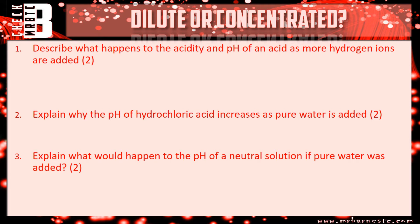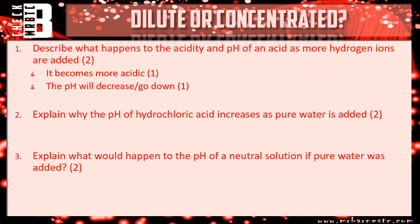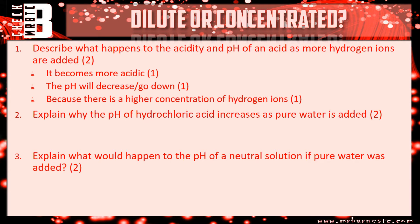Okay, hopefully you've gone through that. Question one was: describe what happens to the acidity and pH of an acid as more hydrogen ions are added — worth two marks. Your first mark is for saying it becomes more acidic: the more hydrogen ions you have, the more acidic it becomes. Then you need to talk about the pH, which will decrease or go down, because there's a higher concentration of hydrogen ions.